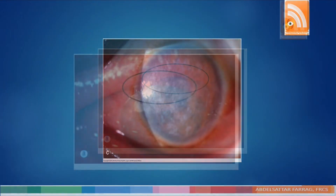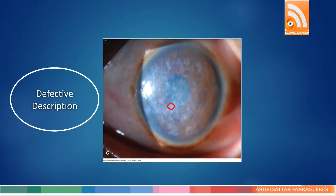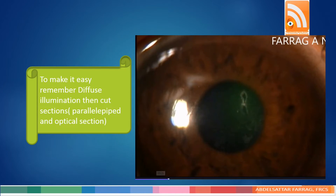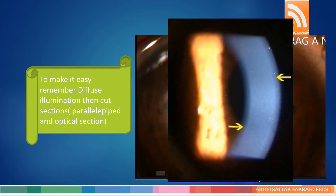The second pitfall is defective description of the main pathology. You need to give more detail. For instance, in the previous case, we can say: 'Grayish-white dense ill-defined corneal opacity extending from limbus to limbus, with the intervening space being hazy.'